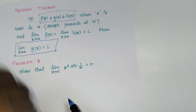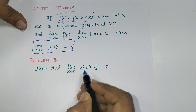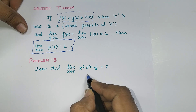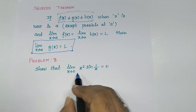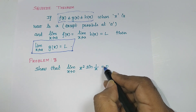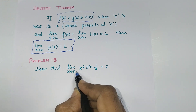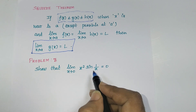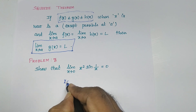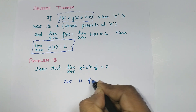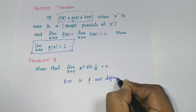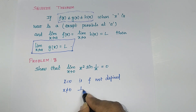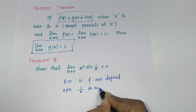Take this problem: limit as x tends to 0 of x²·sin(1/x) = 0. We are going to prove this. When substituting x = 0 directly, we get 0 · sin(1/0), and 1/0 is infinity — the function is not defined at x = 0. So x must not equal 0, meaning 1/x is real, not imaginary.